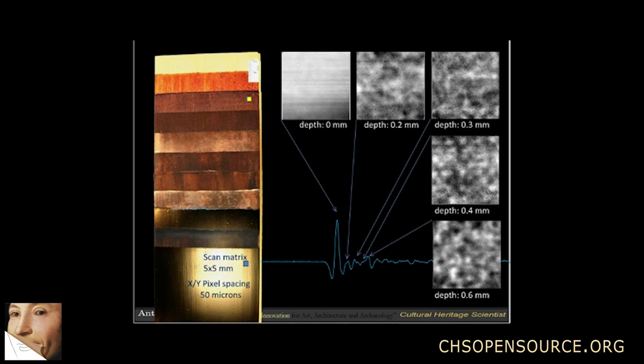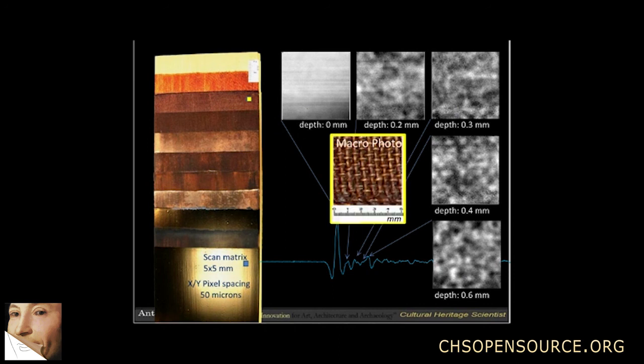We can compare it with a macro photo of the textile. And it appears obvious that the dots on the T-ray image are spaced as the threads in the textile pattern. Therefore, T-rays can be used successfully in detecting the textile substrate in lacquer.